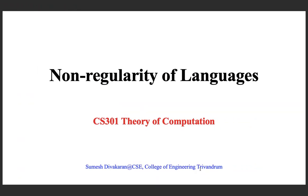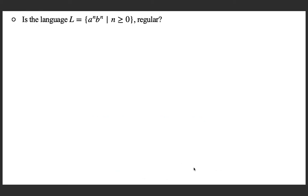We have seen various mathematical representations for regular languages, and today we are going to prove that some languages are non-regular. The topic for today is non-regularity of languages. We start with an example language: is this language regular? The language is n number of A's followed by n number of B's for some natural number n. What is your answer — can it be regular?